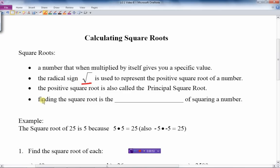And then finding the square root is the opposite. So square root is the opposite of squaring a number, just like the opposite of multiplication is division, the opposite of adding is subtracting. The opposite of square root is squaring, vice versa.